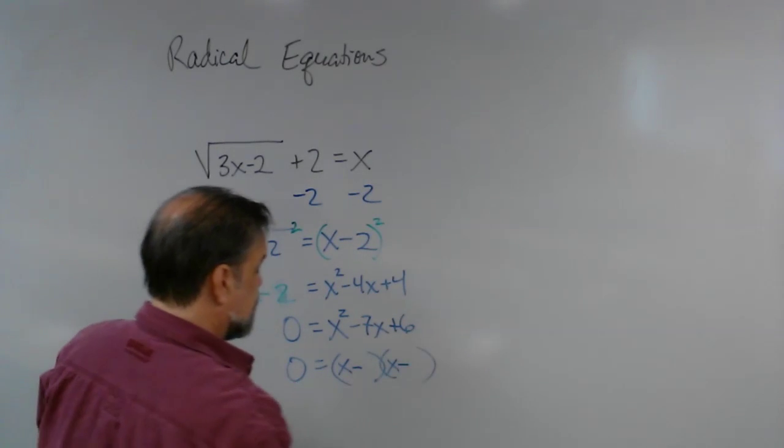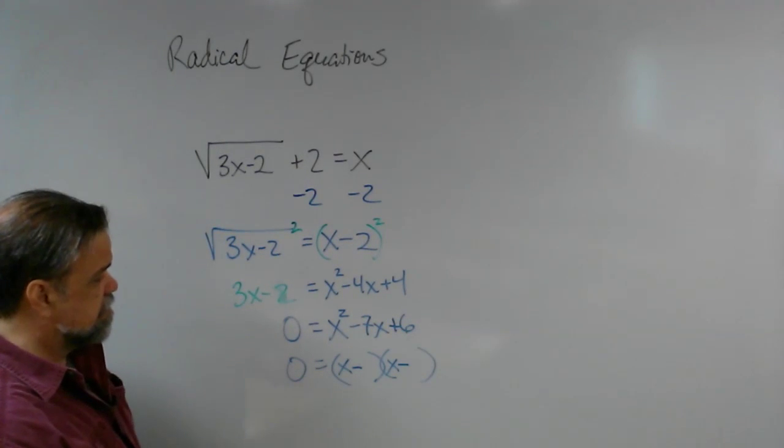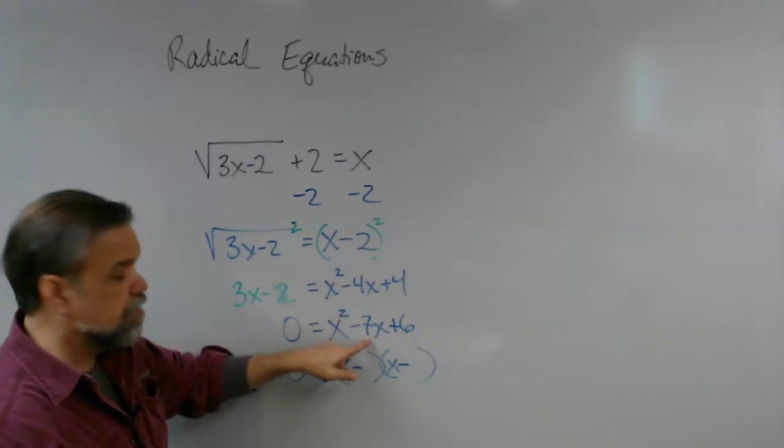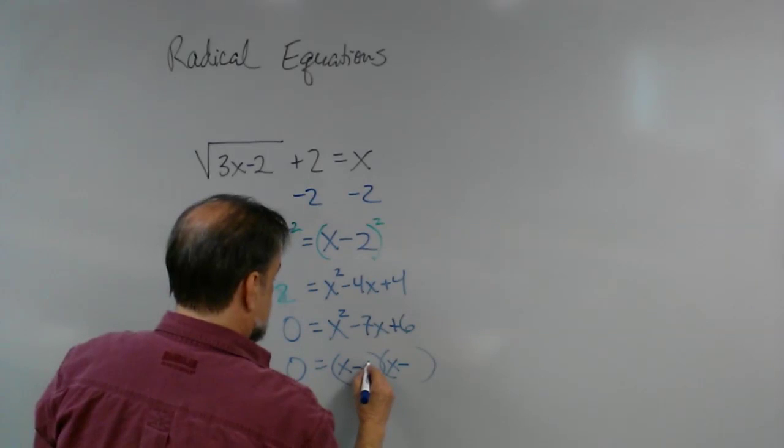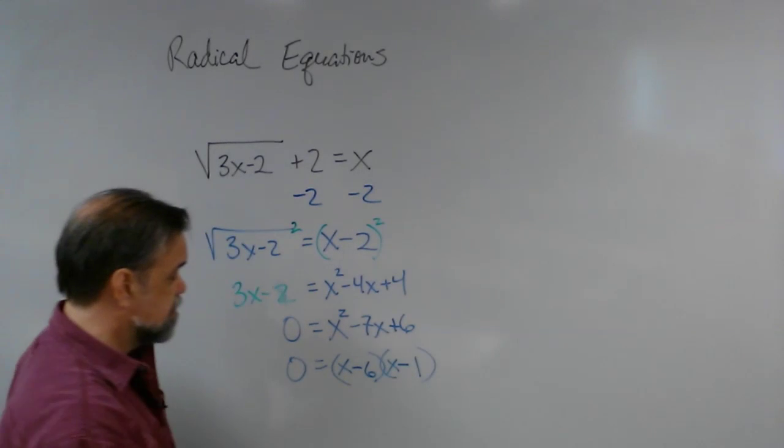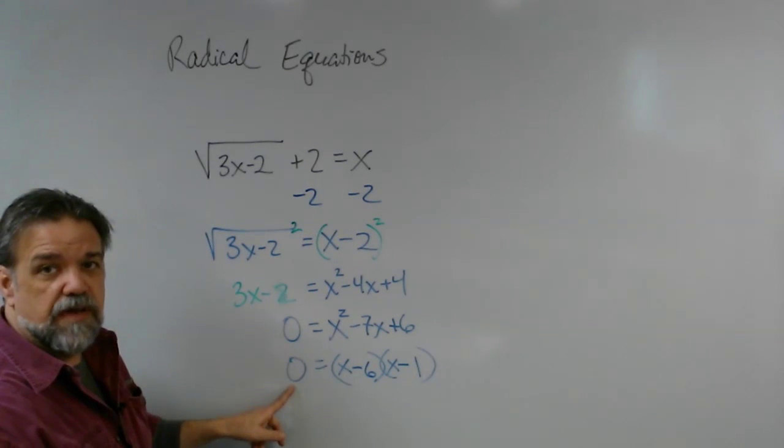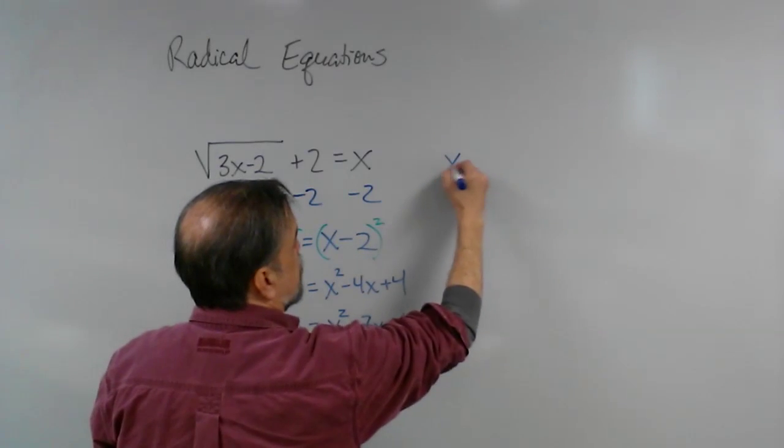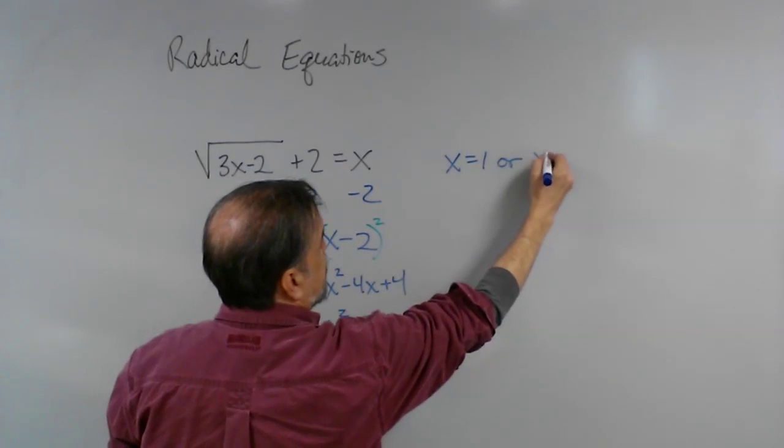Let's see, two numbers whose product is 6 that add up to 7, that would be 6 and 1. So this is going to be x minus 6 times x minus 1 equals 0. And if x minus 6 times x minus 1 equals 0, that means either x equals 1 or x equals 6, and those are my two possible answers.